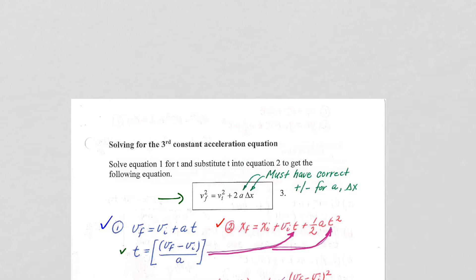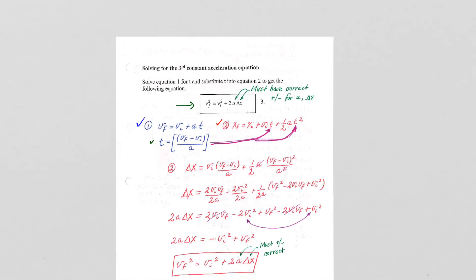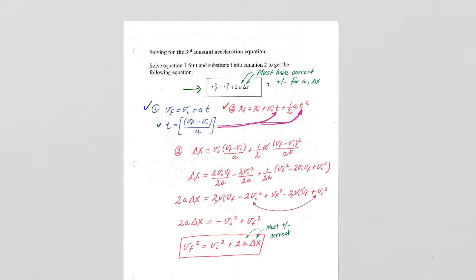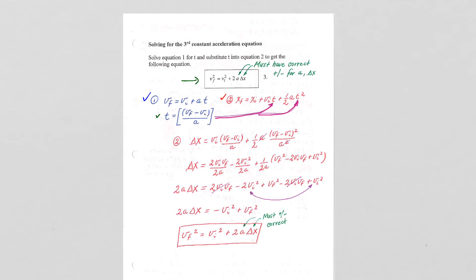Okay, so hopefully you have successfully done that. If not, you can take a look at what I have here, how the algebra works out. We get v_final squared equals v_initial squared plus 2a delta x. I have it written here twice, so you don't really need to put it in there twice.